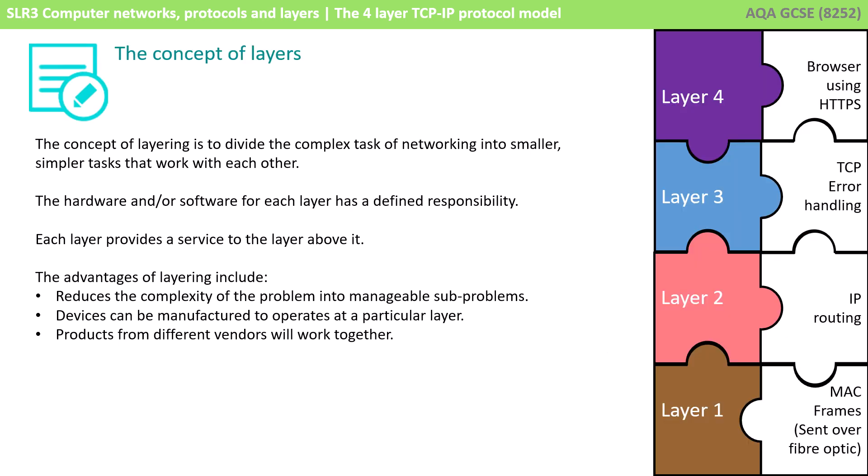Here we have a simple abstracted example of how we might send a web page over the internet to a client device once it's been requested. There are a number of tasks which need to be performed to successfully get the web page transferred, such as sending the web page itself using HTTPS, using TCP to handle errors at each stage, using IP to correctly route the traffic from one node to another, and constructing the appropriate MAC frames and sending those out correctly over fibre optic connections as pulses of light. All of these tasks need to work for our web page to arrive correctly.